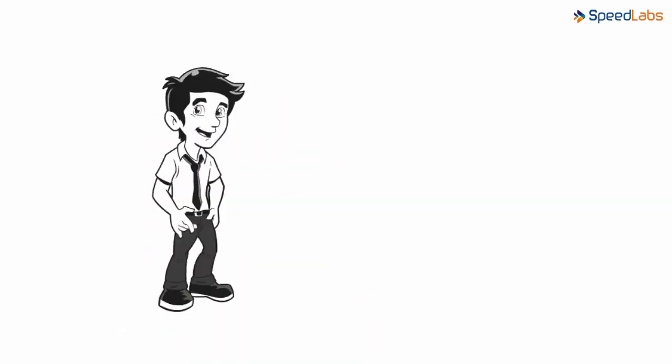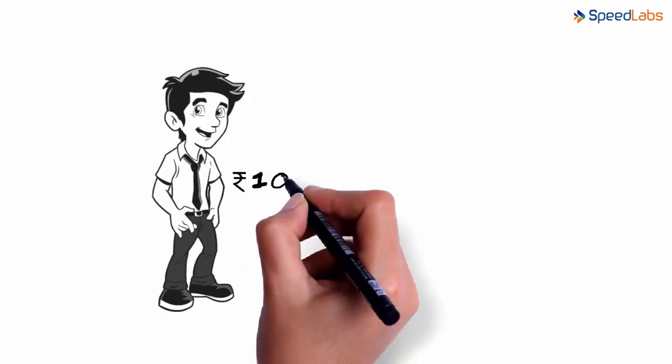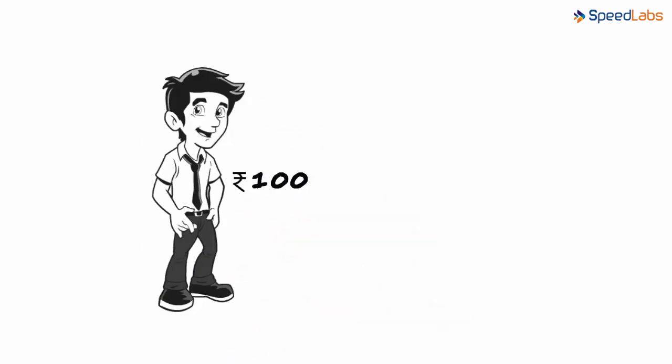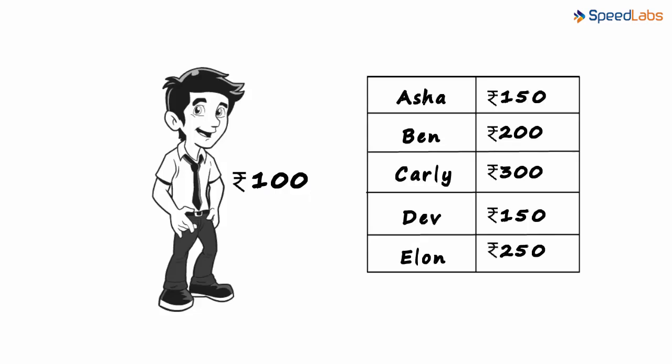Zen was trying to convince his dad to increase his weekly allowance. Zen is given a weekly allowance of 100 rupees per week. To make his point, he asks a few kids in his neighborhood about their monthly allowance, and this is the data he collected.